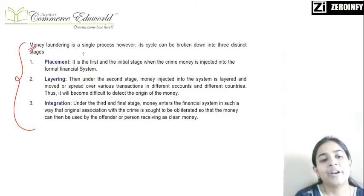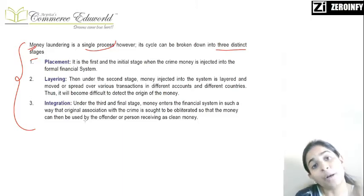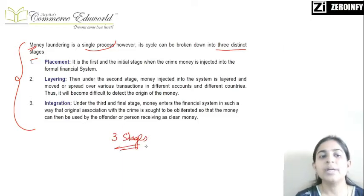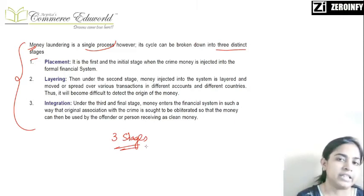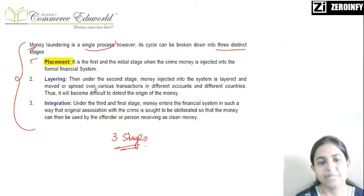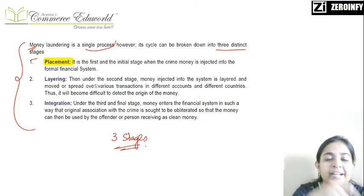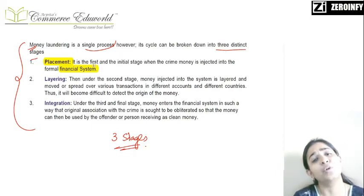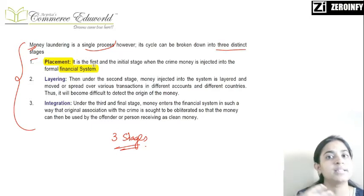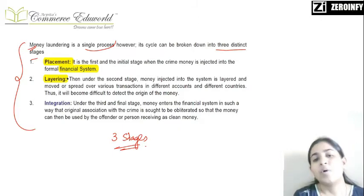Money laundering is a single process; however, the cycle can be broken into three stages. The first stage is Placement. Placement means the crime money - the money which has been earned from criminal activities - is injected into the financial system. The financial system here means banks, etc. So you have earned money from some illegal sources and now you are trying to put that money into banks.